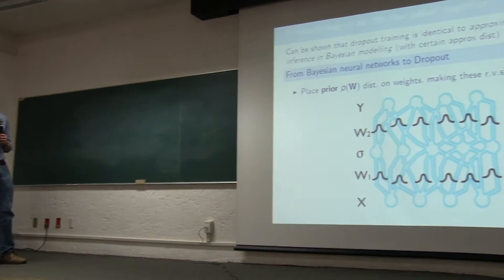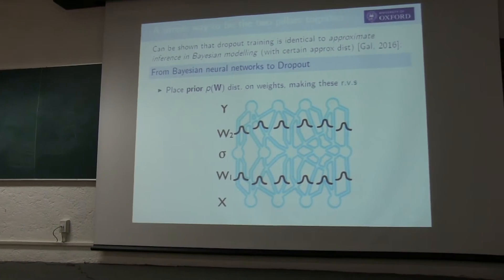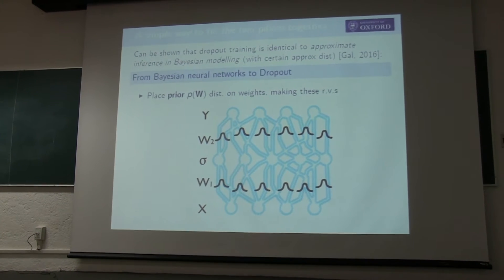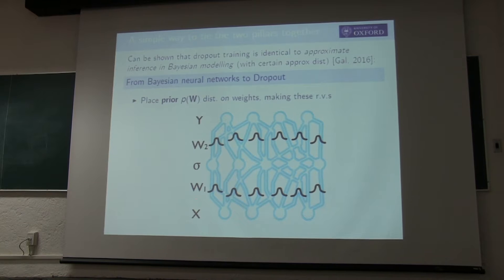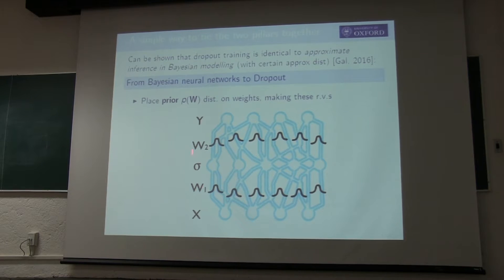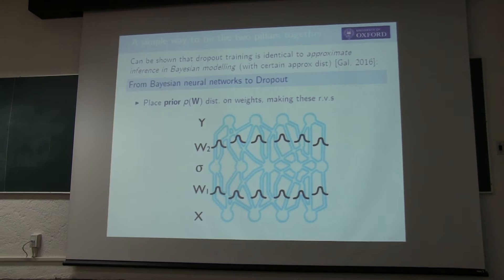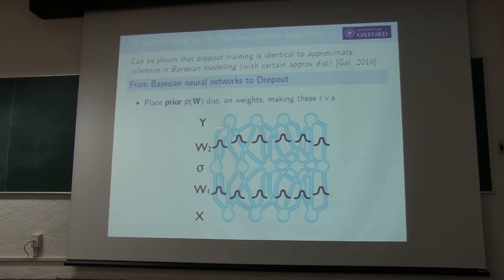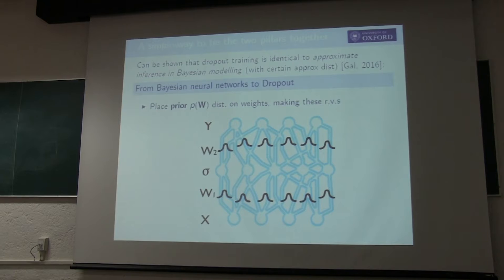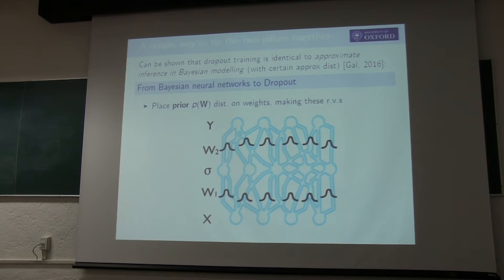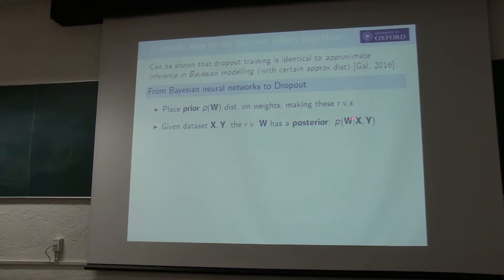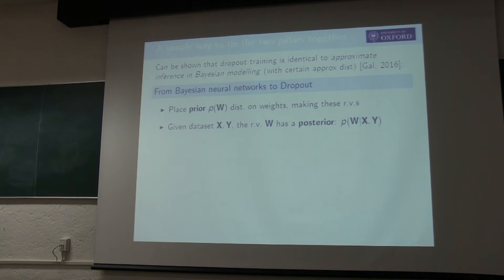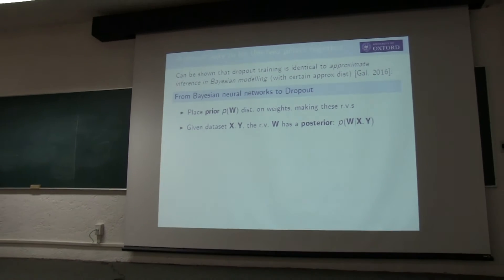A Bayesian neural network is a neural network where we put a prior distribution p(w) over the weights w1, w2. This is a probabilistic model. If we define a likelihood — the probability of y conditioned on w and x — then multiplying the prior by the likelihood and normalizing, we can find the posterior: the most likely weight parameters conditioned on the data.